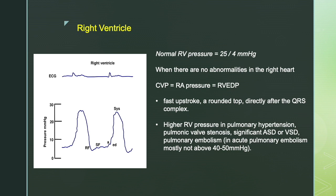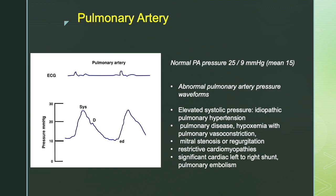Similarly, looking at right ventricular pressures: the normal RV pressure is 25 systolic and 4 diastolic. Elevated end-diastolic pressure, or a dip-and-plateau pattern as in constrictive pericarditis, or a faster upstroke and higher RV pressure as in pulmonary hypertension or valvular disease — all these changes are identified from the RV pressure tracing. In the pulmonary artery, we look for abnormal waveform morphology: elevated systolic pressure as in idiopathic pulmonary hypertension, hypoxemia-related PH, or left-to-right shunts; and reduced pulse pressure as in right ventricular ischemia or infarction, or pulmonary embolism.